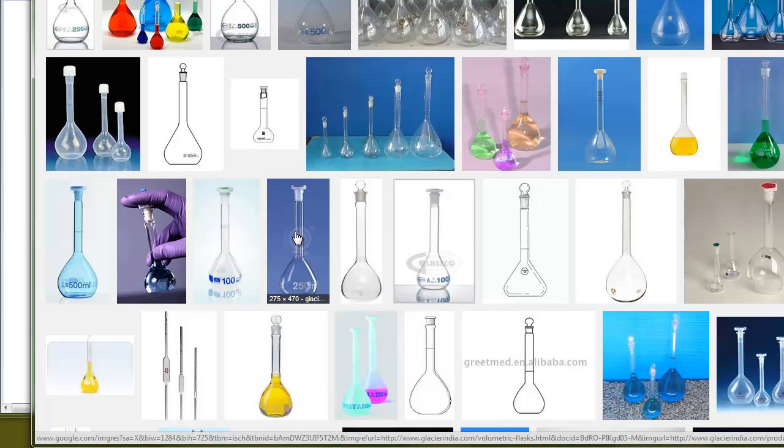These are volumetric flasks. They each have a mark on the neck, this tall skinny neck. When you fill this flask, you put your solute in, and then you begin adding water slowly while mixing it. Then the last couple of drops of your water for your aqueous solution are to fill it such that the meniscus is right on the mark. And then you have that volume of solution, not necessarily a certain volume of water added. And that's an important distinction to make.